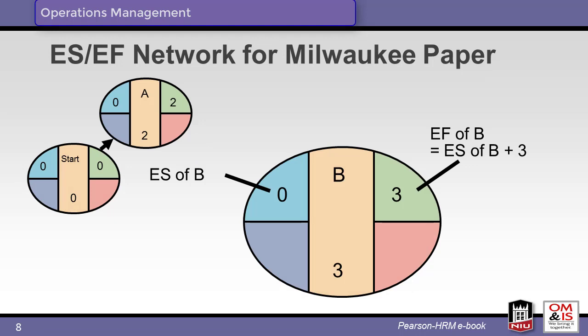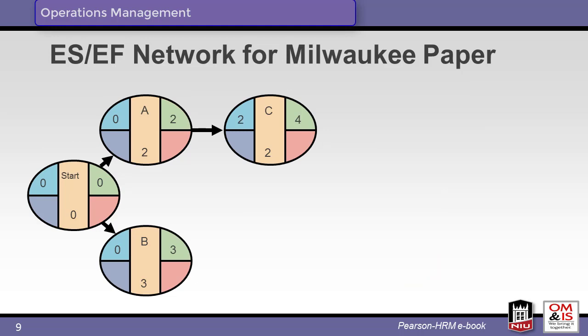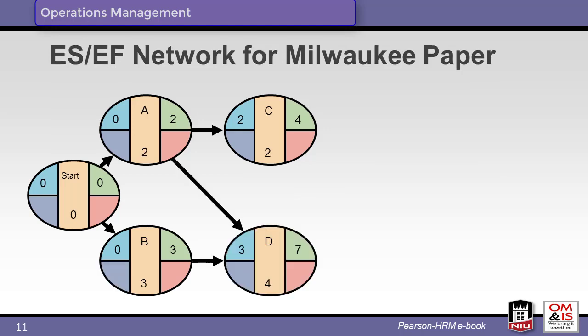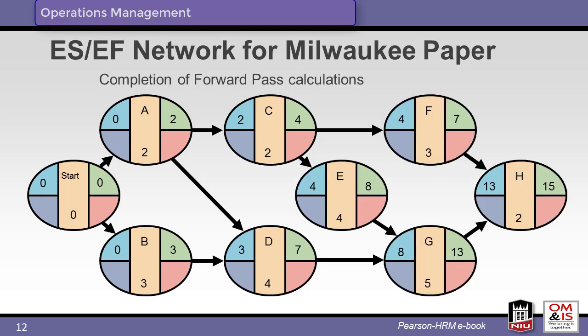We link the start activity to activity A and then add activity B with a duration of three. After linking the start, A and B activities, we add activity C. The activities are linked based upon their precedence. Since activities A and B precede activity D, the earliest start of D is the larger of the earliest finishes for activities A and B. Now activity D is linked to its predecessors using the same process. Using the same logic, we complete the activity network with the remaining activities. This completes the forward pass analysis. Note that the earliest finish of activity H and thus the overall project is 15.